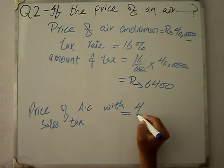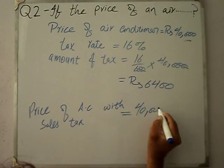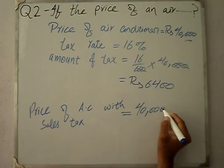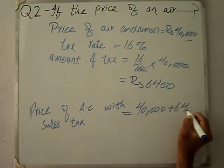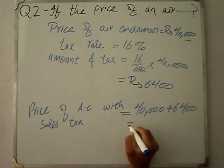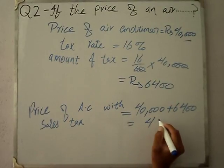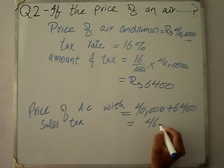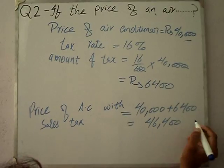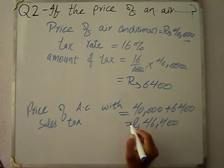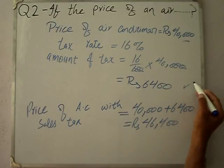40,000 plus 6,400 tax added equals 46,400. This is the price of air conditioner with sales tax.